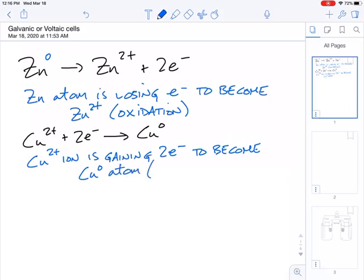What we'd want you to take away from this is that the copper 2+ ion is gaining electrons to become the copper atom. When you're gaining electrons, this is reduction.